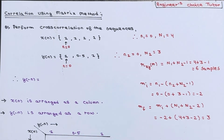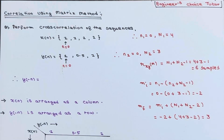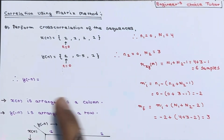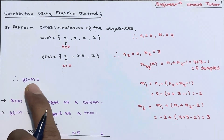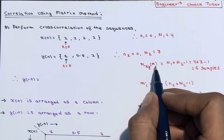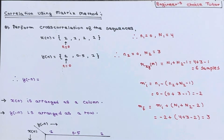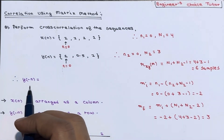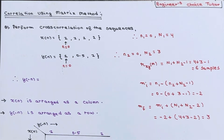One important point: the convolution of x(n) and y(-n) gives you the cross-correlation r_xy(m). So if you do the linear convolution of x(n) and y(-n), you will get the cross-correlation r_xy(m).